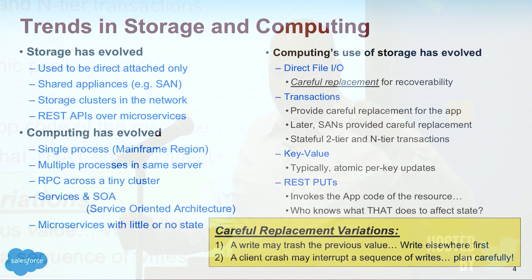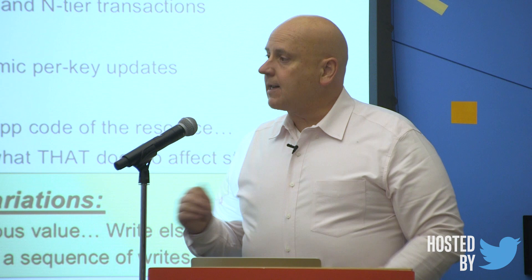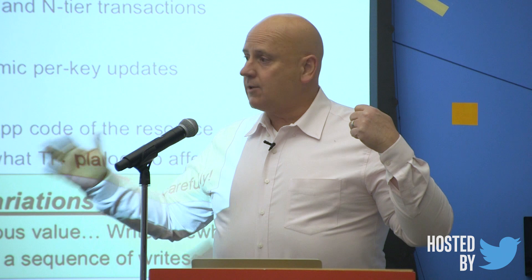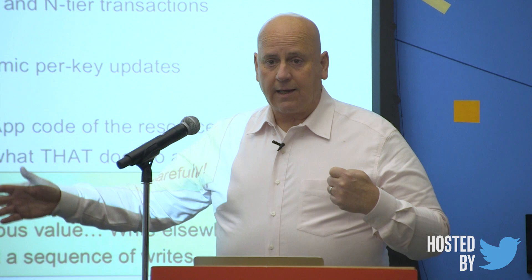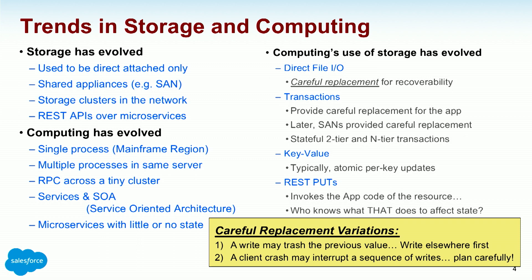You get into stateful two-tier and interior transactions. We've grown to the point where that doesn't scale, so people started doing key-value stores — you don't worry about where the key stuff is, we'll find it and update the key and value, but you can't do two of them together transactionally. REST puts invoke app code, but who knows what that does to the state? There are challenges in modern microservice-based apps.